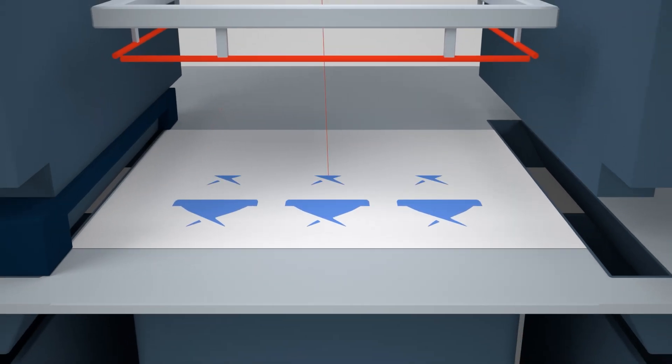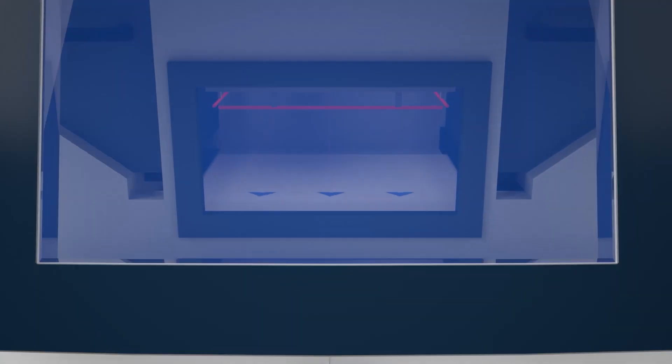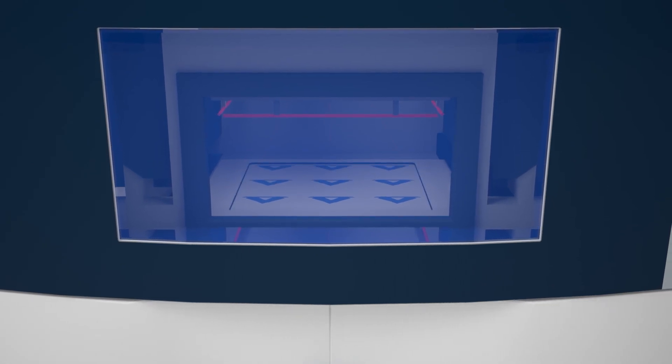During printing, the unmelted powder supports the solidified parts which eliminates the need for dedicated support structures.